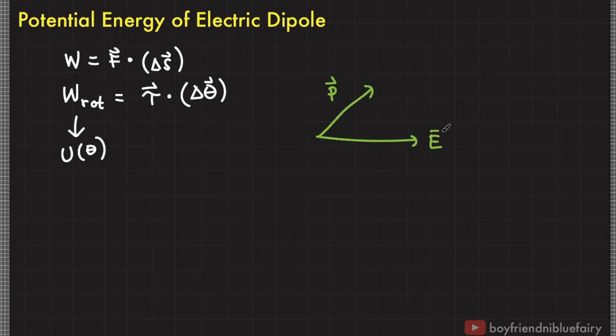Examining P cross E, if this is the electric field and this is the dipole moment vector, when dipole rotates, the angle between them decreases. Hence, the rotation results to a decreasing change in angle.